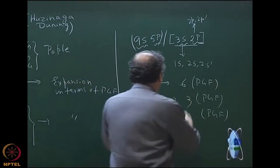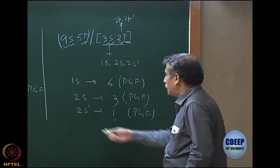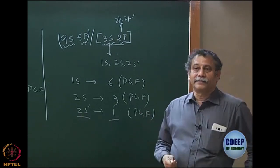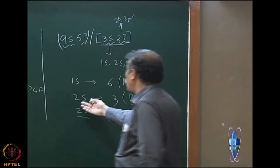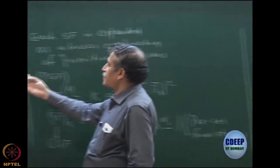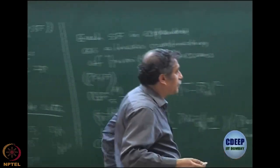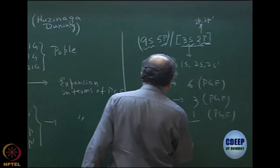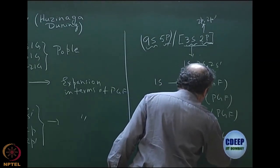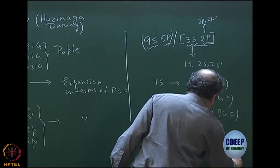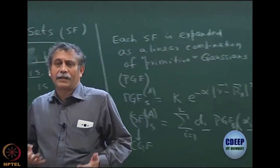For each expansion you have coefficients, which are listed and preset. The prime remains uncontracted because it is only an additional basis to 2s — 1 primitive is sufficient since actual 2s is already accounted for. Similarly for p functions: 4 primitives for 2p and 1 for 2p', so 5p contracted as 4+1. This is the typical Huzinaga-Dunning convention for one basis set — you can have many such basis sets.